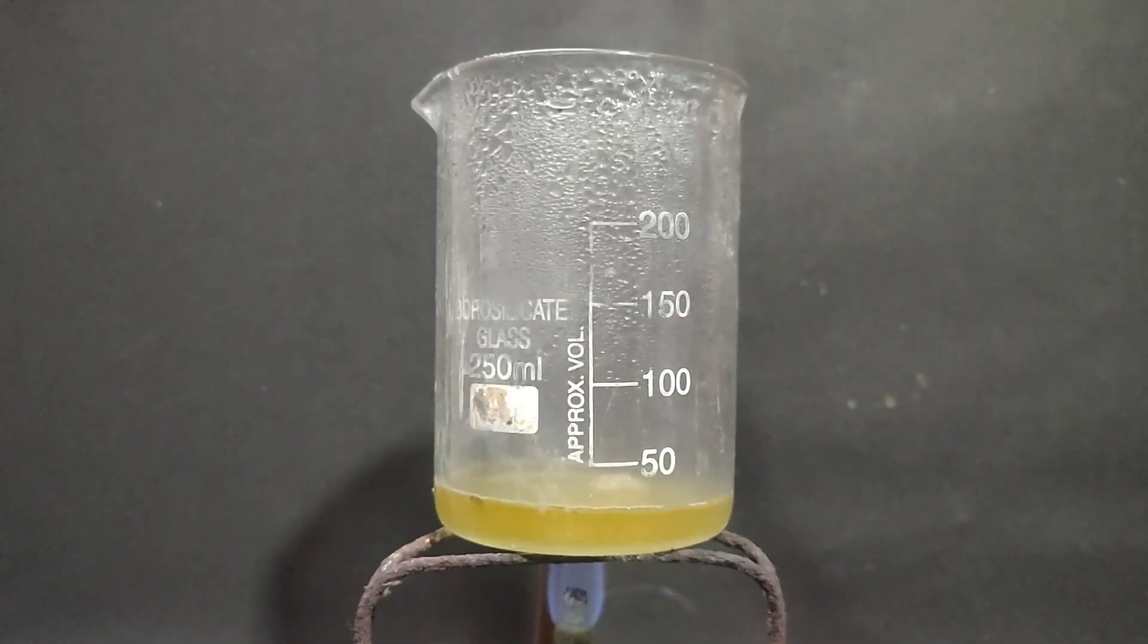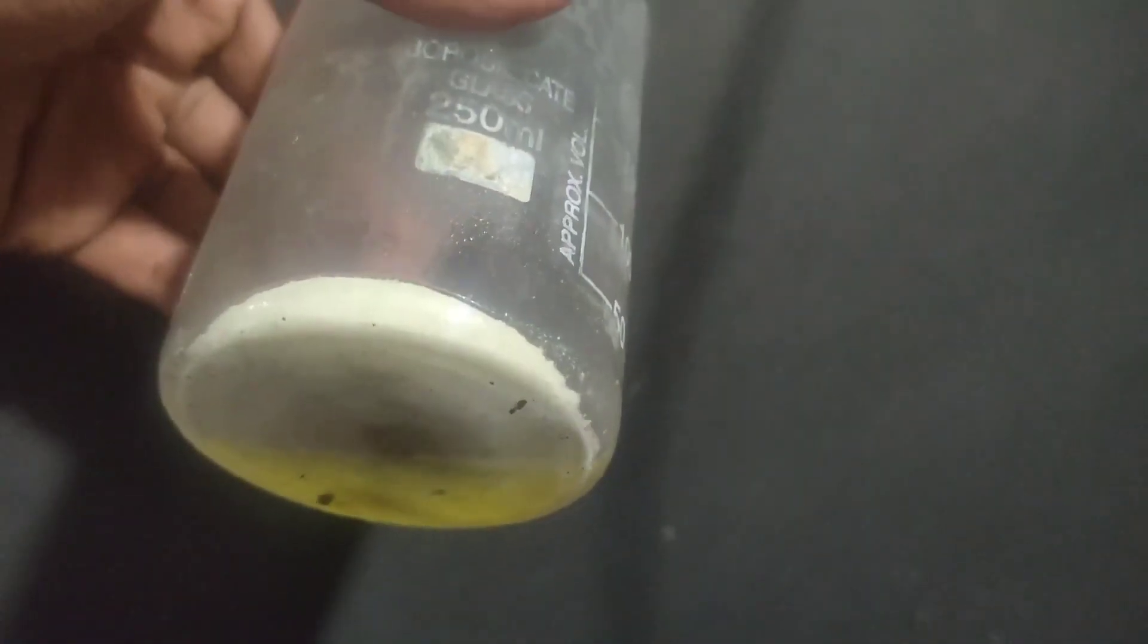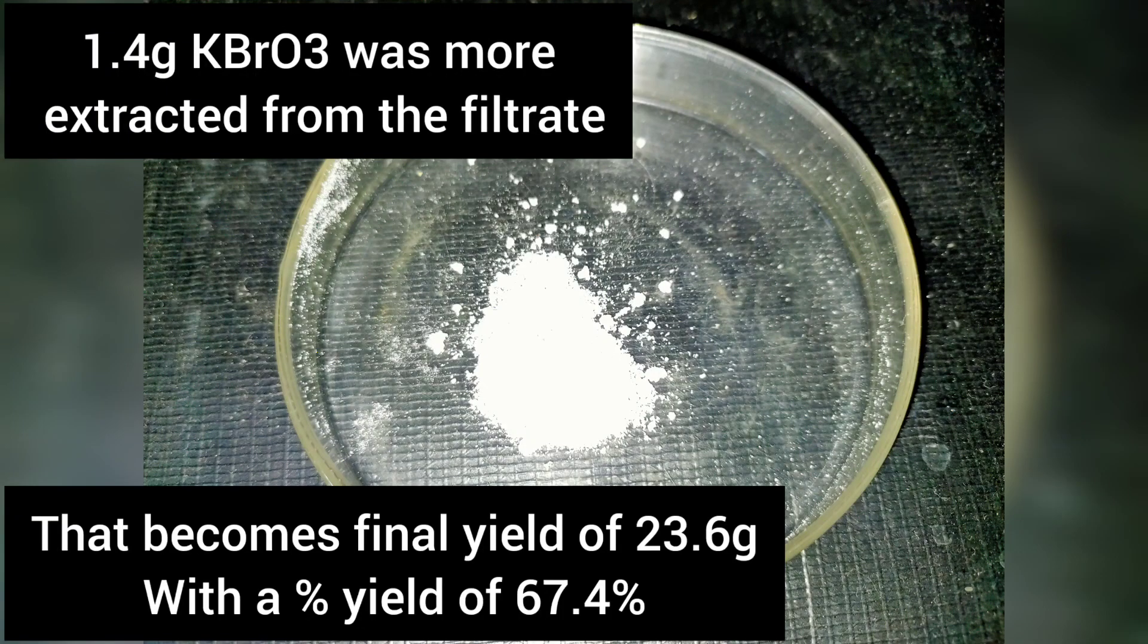Then I took the filtrate and concentrated it from around 100 ml to 25 ml. And on cooling, some small amount of crystals were formed inside the beaker. I also filtered them using vacuum filtration and dried them in a desiccator. And this yield came around to be 1.4 gram.